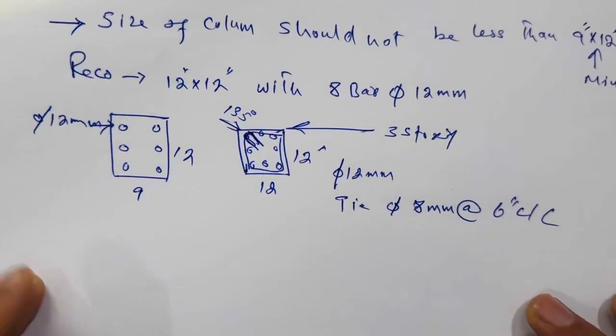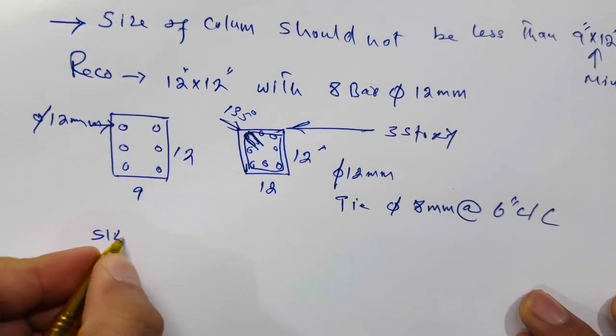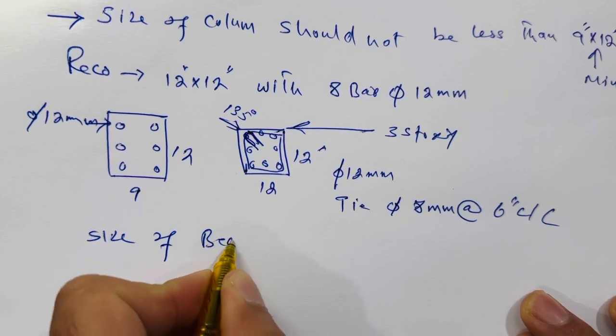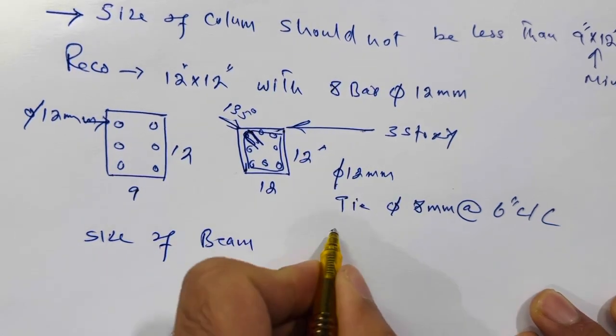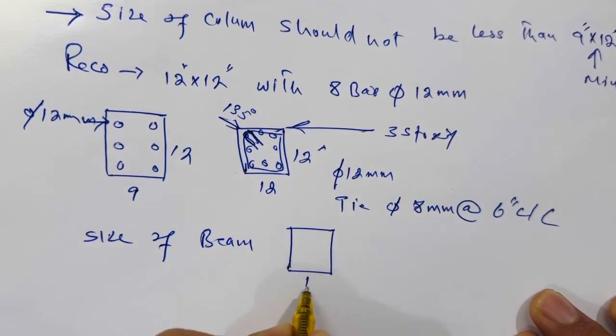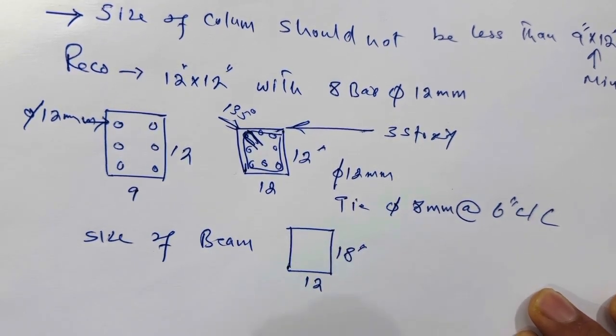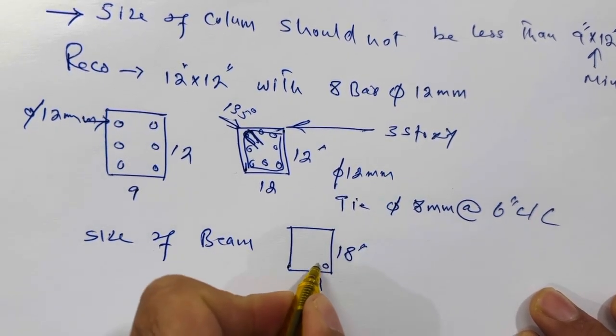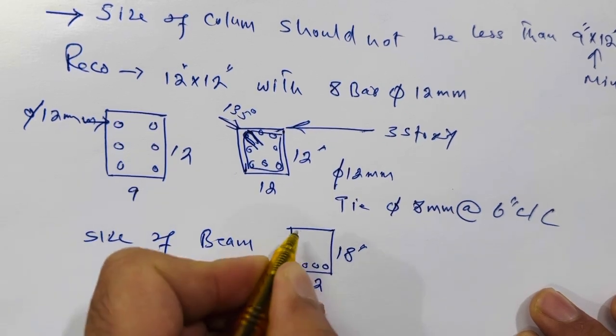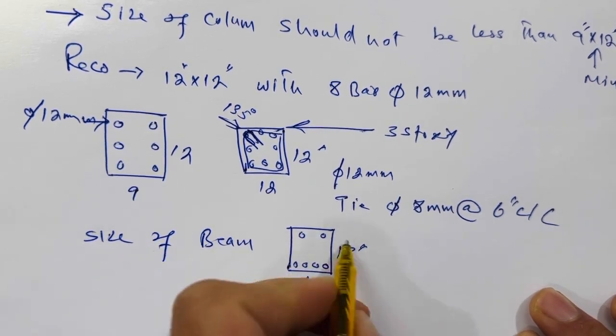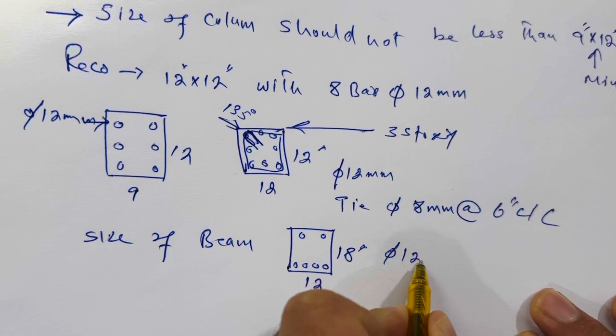Next, let me guide you for size of beam. Size of beam should be 12 inches by 18 inches, not less than this, with six numbers of steel rods: four at the bottom and two at the top, and the diameter should be 12 millimeter.